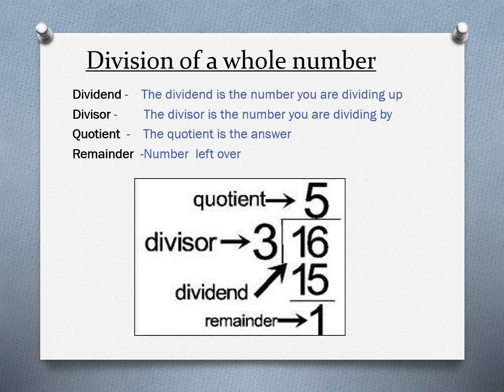Division of whole numbers — each part of a division equation has a name. The dividend is the number you are dividing up. The divisor is the number you are dividing by. The quotient is the answer. The remainder is the number left over. In the example, 16 is the dividend and 3 is the divisor.